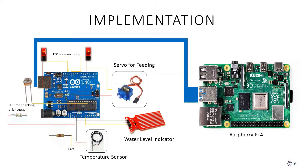For the implementation, the main tools used are the Raspberry Pi and the Arduino Uno, along with the required sensors: a water level indicator, temperature sensor, LDR, and a servo for feeding. All of this is remotely controlled by the Raspberry Pi, which collects, stores, and evaluates data from all the sensors to detect abnormalities.